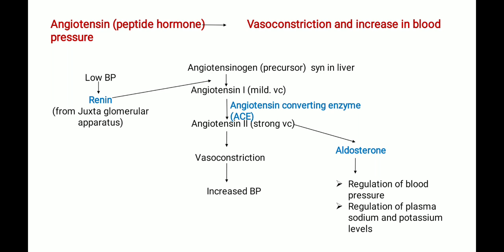Angiotensin causes vasoconstriction, helping to increase blood pressure. In the condition of low blood pressure, renin is secreted from the juxtaglomerular apparatus of the kidney. This renin helps in the conversion of angiotensinogen — which is synthesized in the liver — to angiotensin 1, which is a mild vasoconstrictor. Then angiotensin converting enzyme (ACE) helps in the conversion of angiotensin 1 to angiotensin 2.